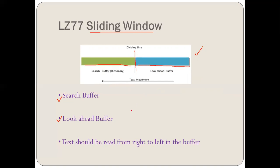The next thing that is very important to understand is that the text will be moving from right to left. That means the direction of text reading will be from right to left, not from left to right. This is how the alphabets or text are going to move in this particular direction. These concepts will be more clear as we move to the example.